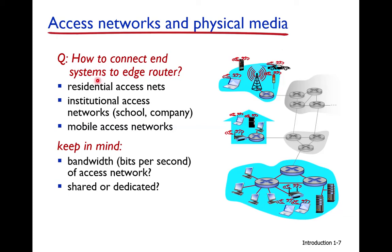Access networks can be categorized into different types: residential access networks for providing internet access to homes, institutional access networks for enterprises like universities, schools, and organizations, and mobile access networks such as 3G or 4G that we currently use. All the access networks we discuss can be classified into one of these three categories.